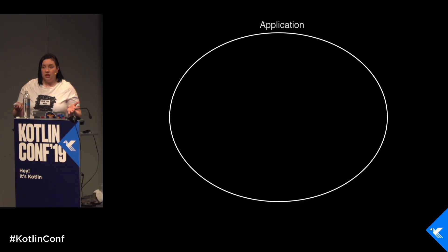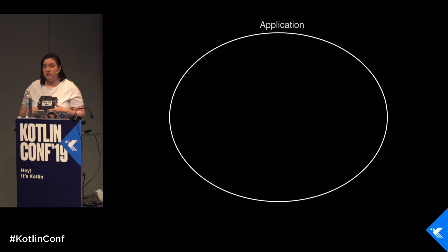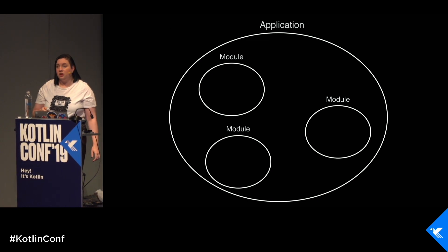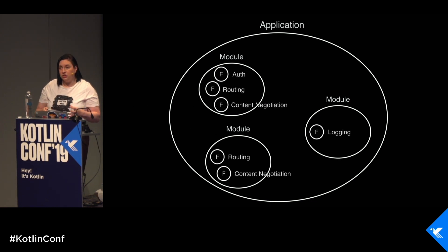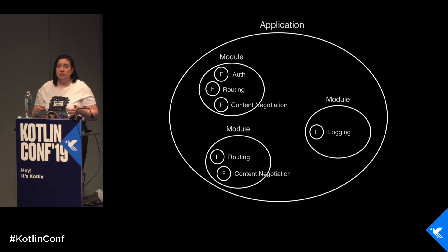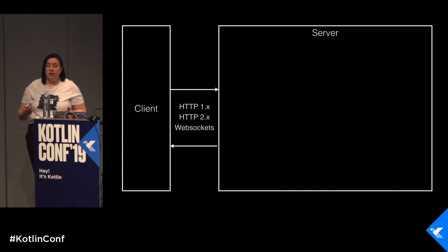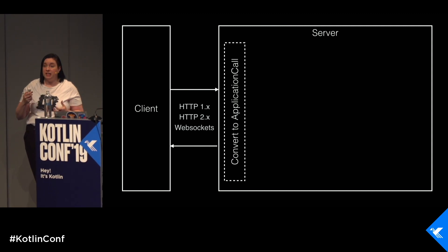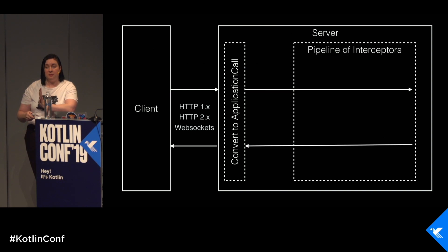Let's have a high-level look at how the Ktor application is structured. A Ktor application has one or more user-defined modules, and each module implements a part of the application logic by installing and configuring features. A feature has a particular functionality, and it intercepts some requests and responses to perform some function. Examples of features include authentication, routing, logging, and content negotiation. Ktor supports HTTP/1, HTTP/2, and WebSockets. Once a request comes in, it's converted to an application call, which flows through a pipeline of interceptors.